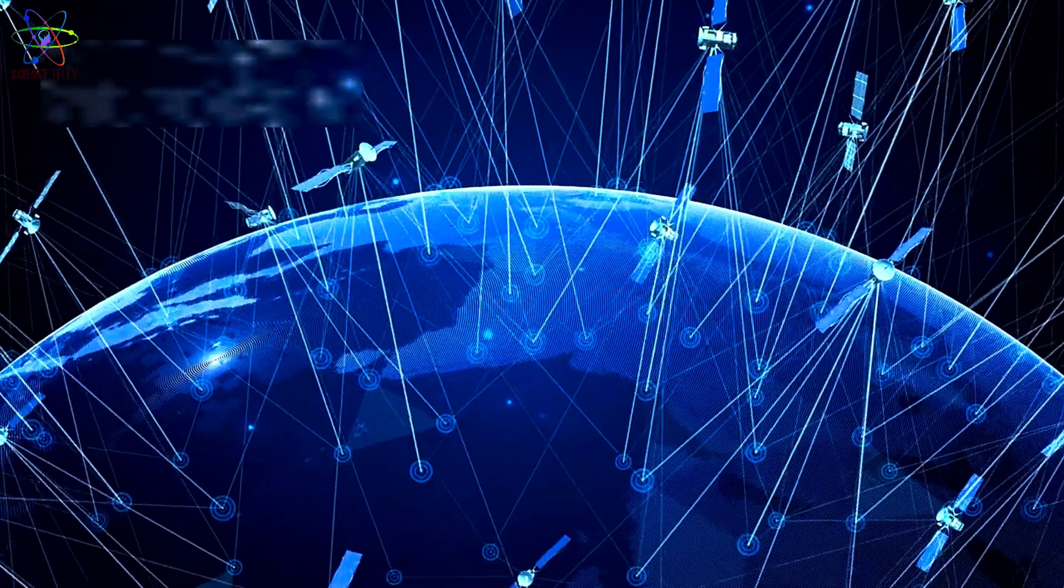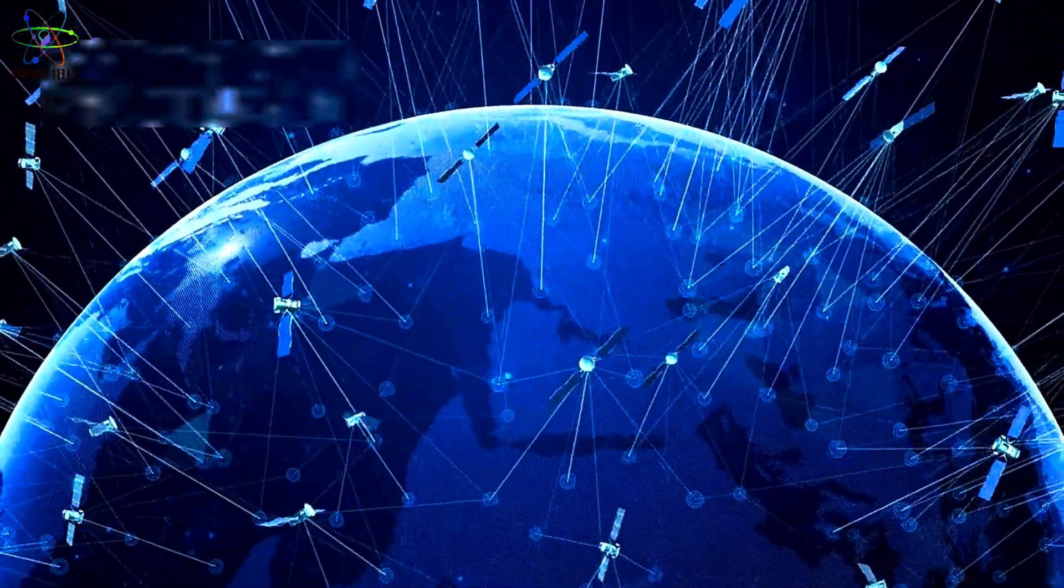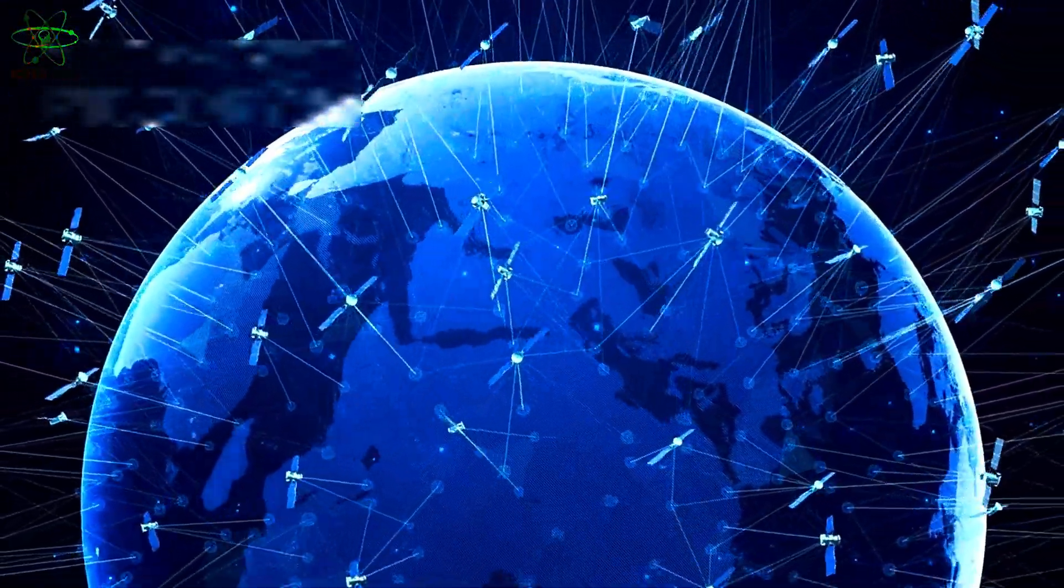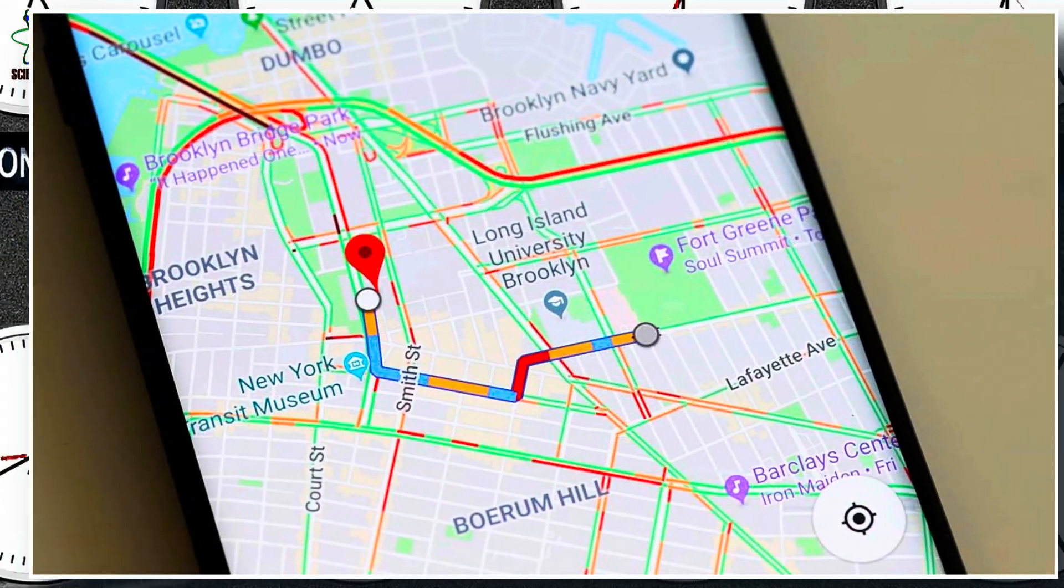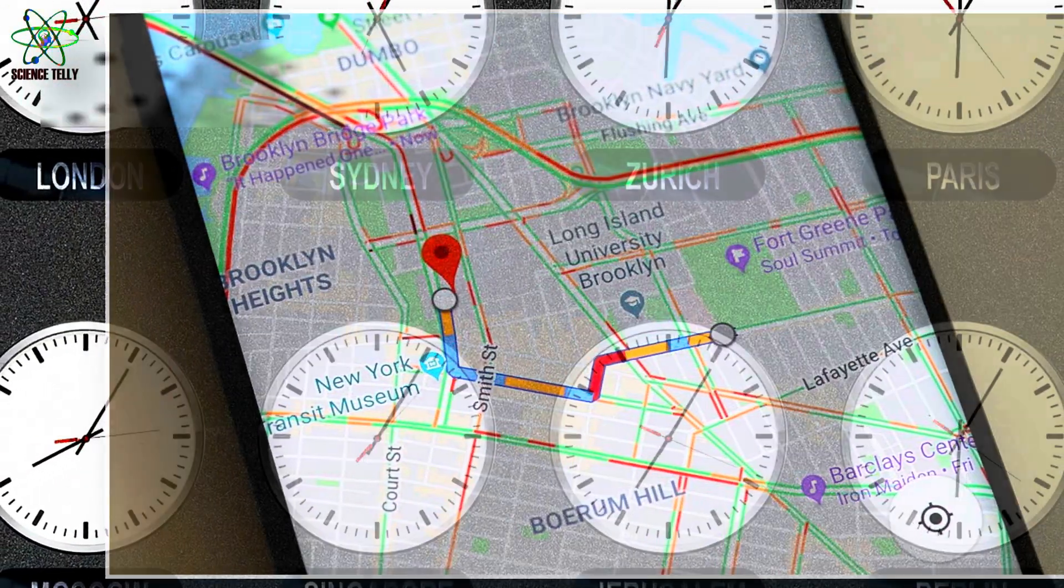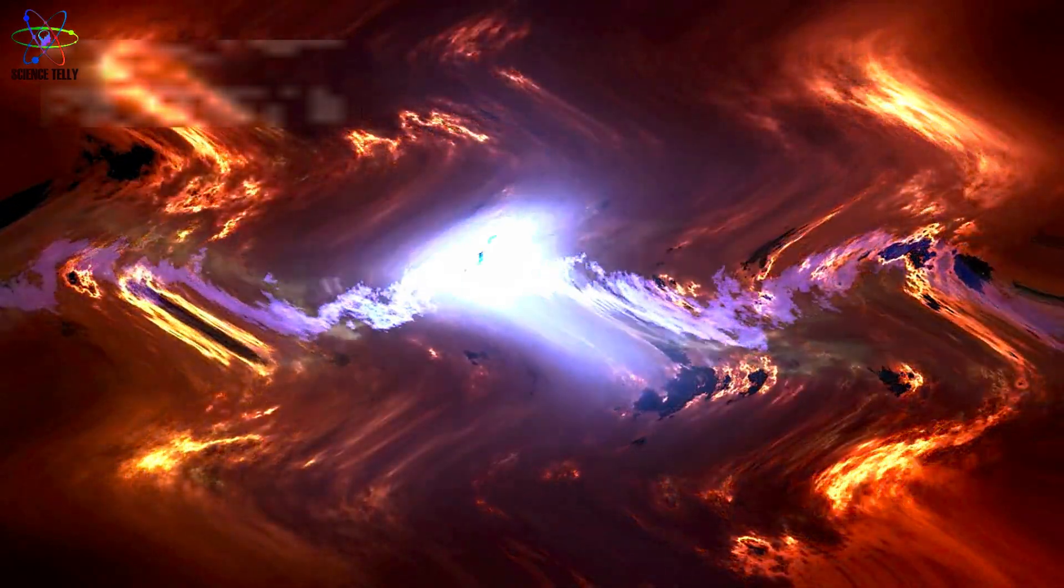This isn't theory. We've measured it. GPS satellites, which orbit high above Earth, have to correct for time moving faster in space. Without those adjustments, your Google Maps would get less accurate by about 10 kilometers per day. So yeah, real stuff.